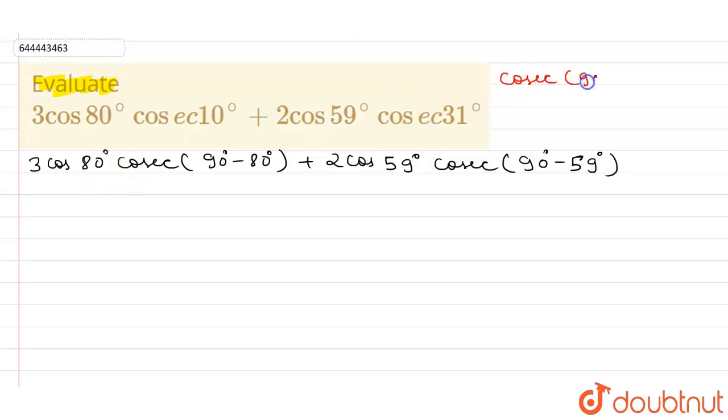cos(90° - θ), we can write it as sec θ. So I can write here 3 cos 80° sec 80° + 2 cos 59° sec 59°. And we know that sec